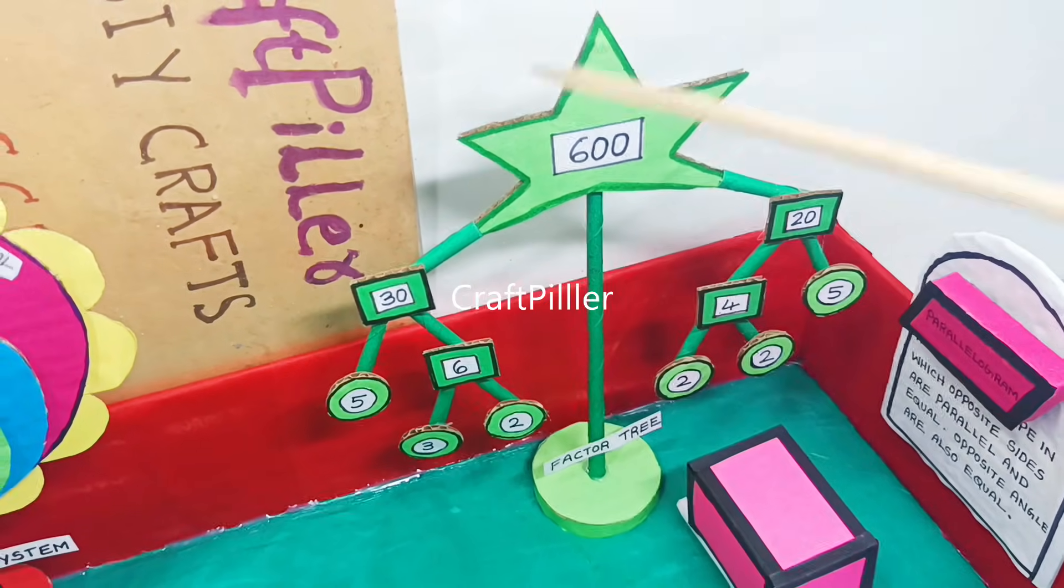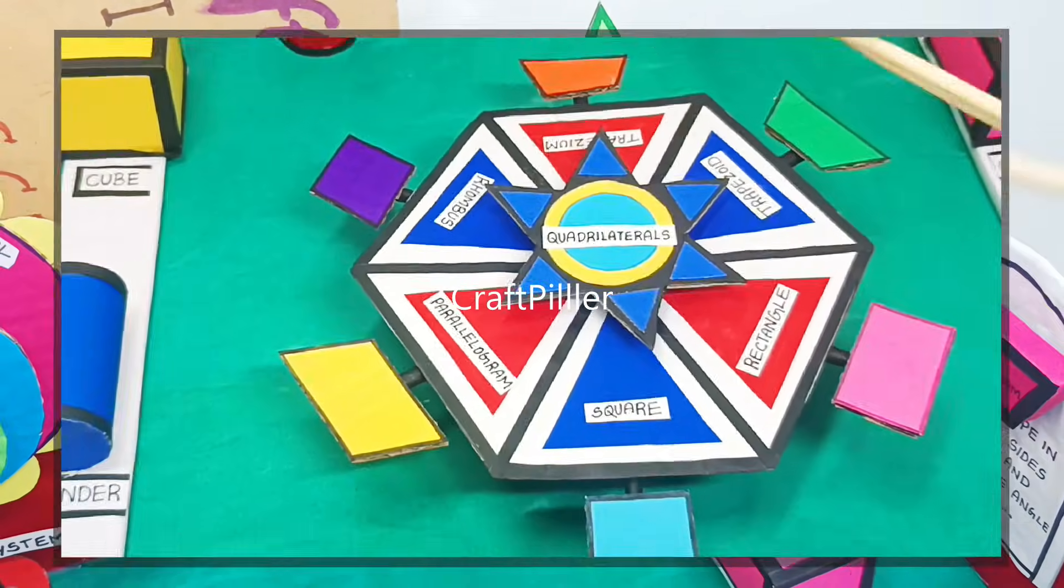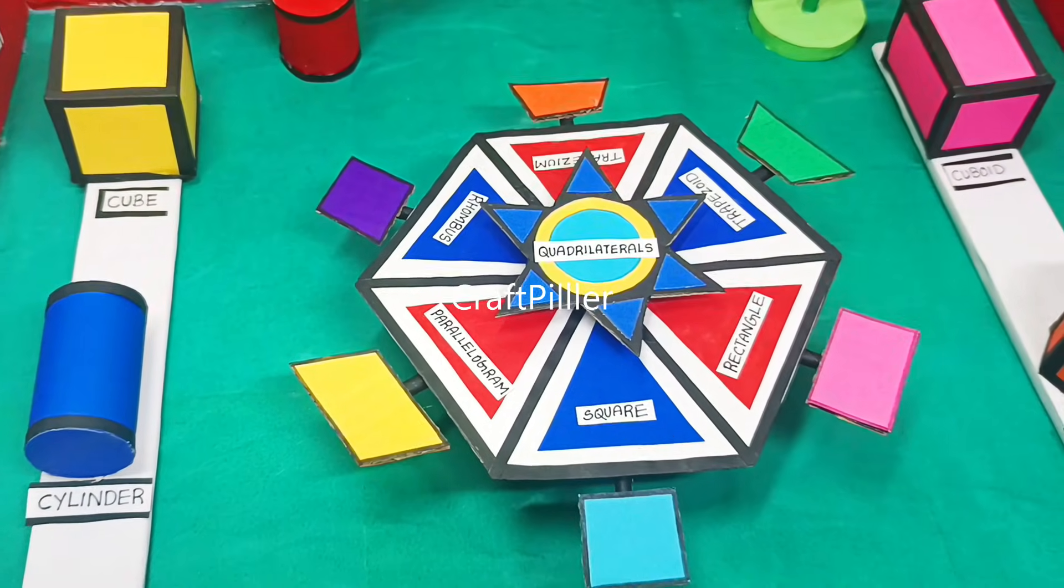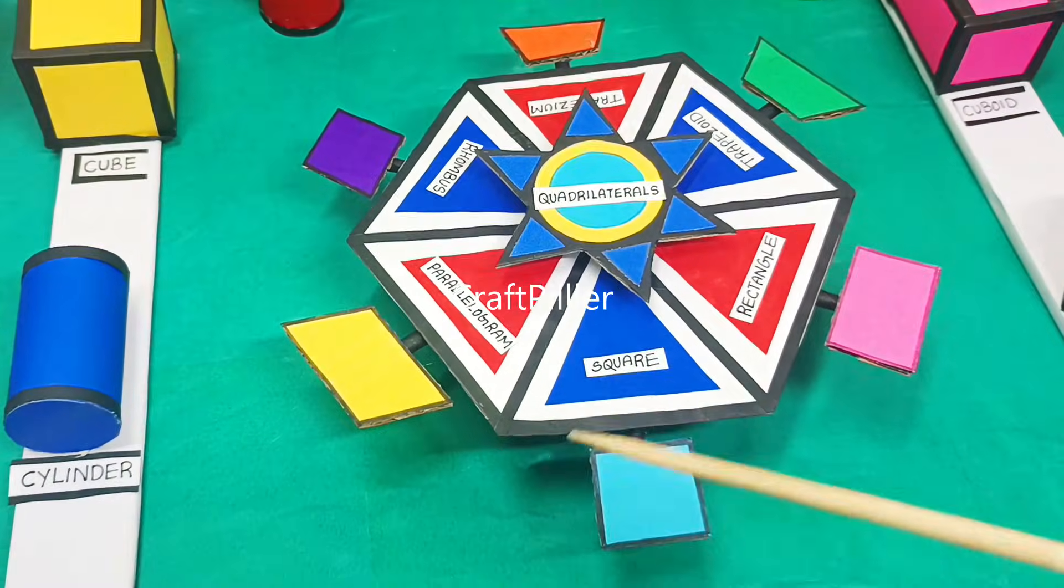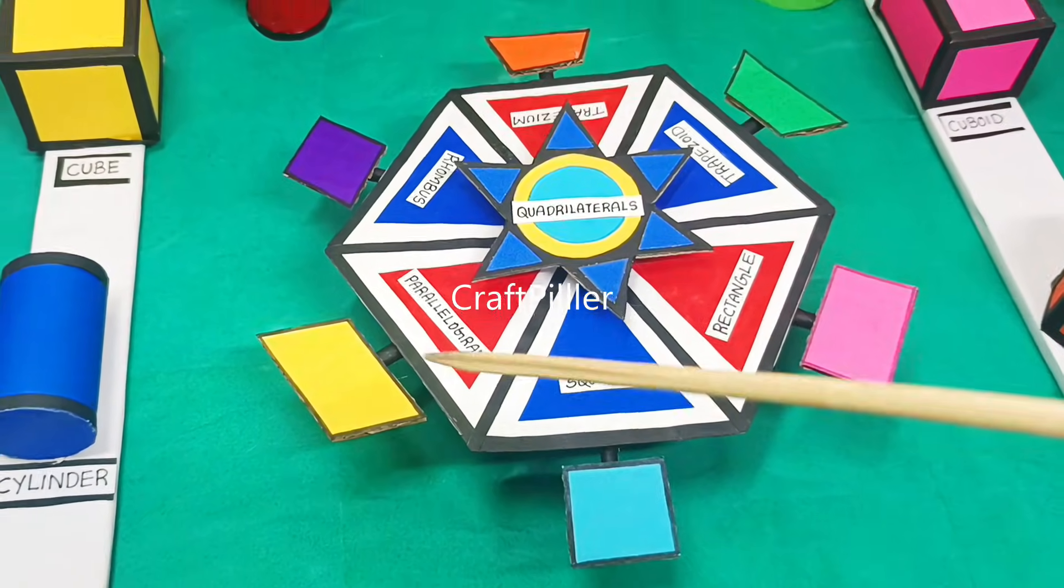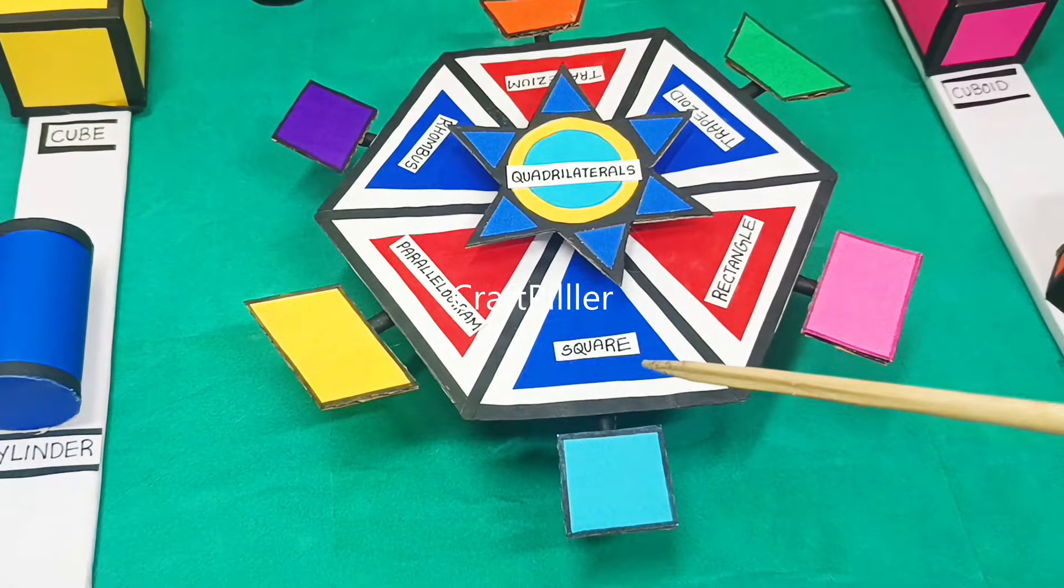The next thing we are depicting in the math park is quadrilaterals. These quadrilaterals are 2D shape polygons. We have showcased various 2D shapes in this quadrilateral section.